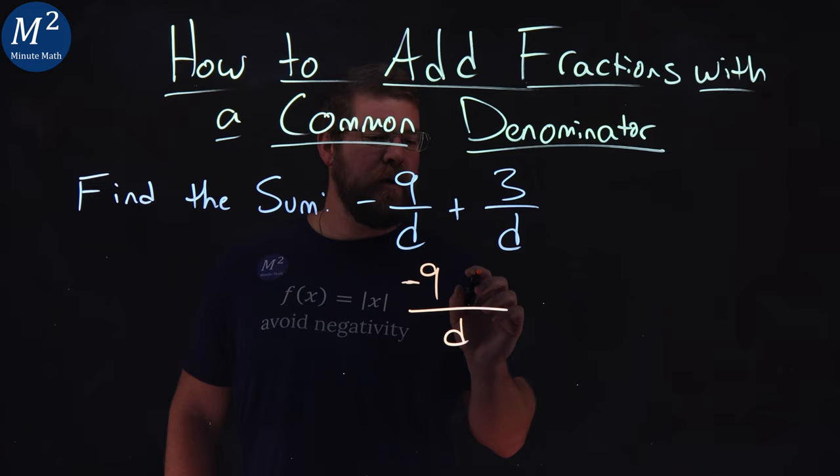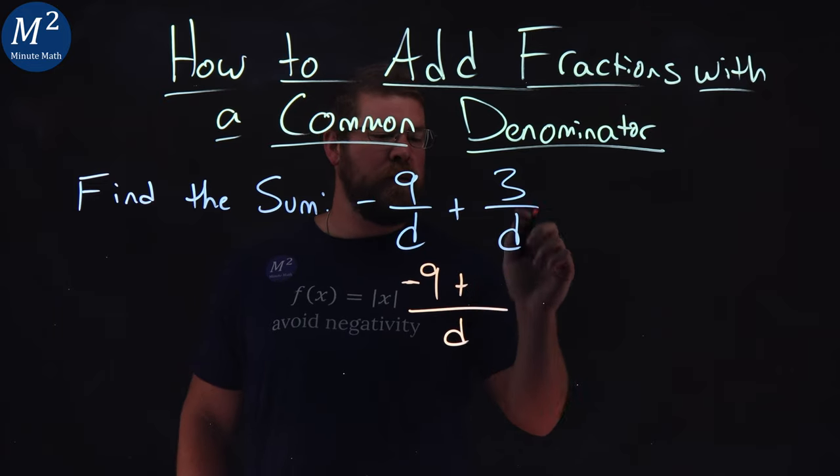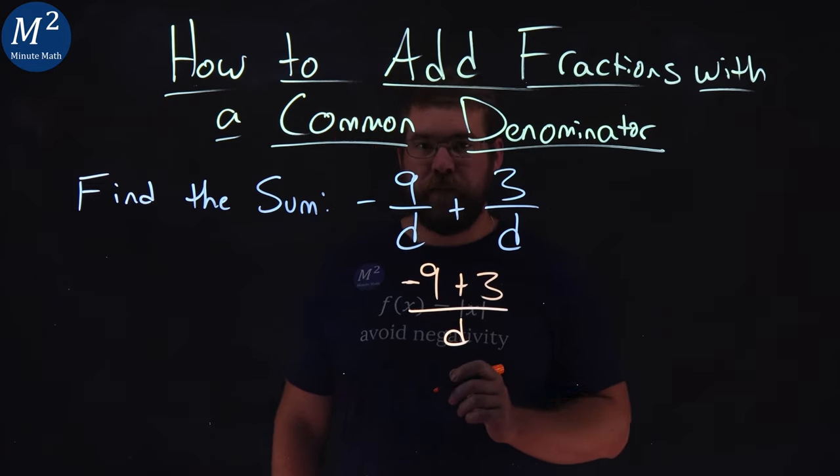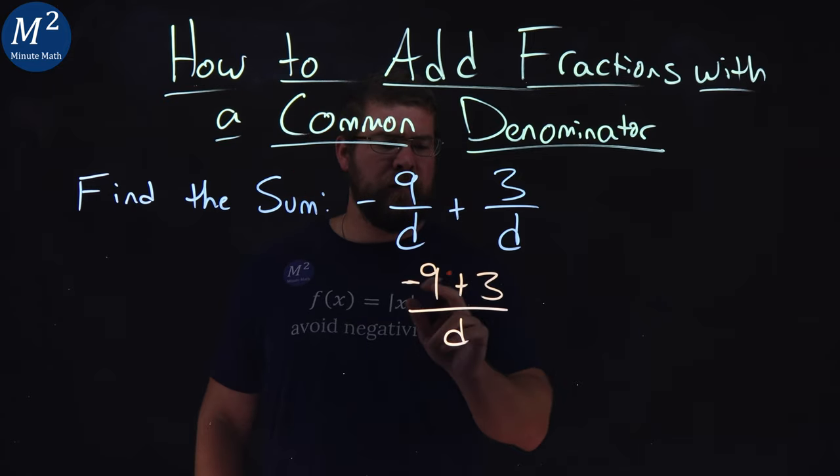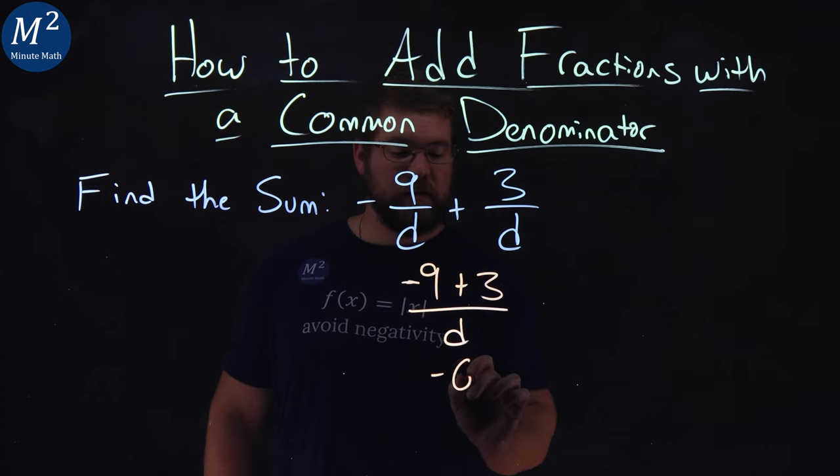Let's do a negative 9 up here, and then we're adding the numerators, and we get a 3. Well, now, negative 9 plus 3, we can simplify. Negative 9 plus 3 is negative 6 over what's left is that d.